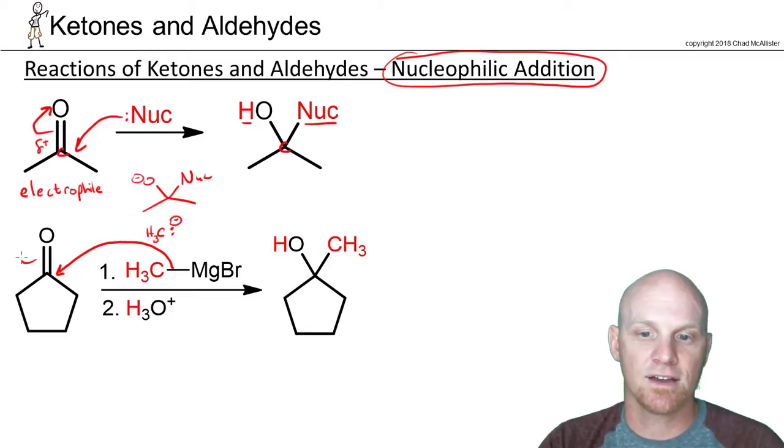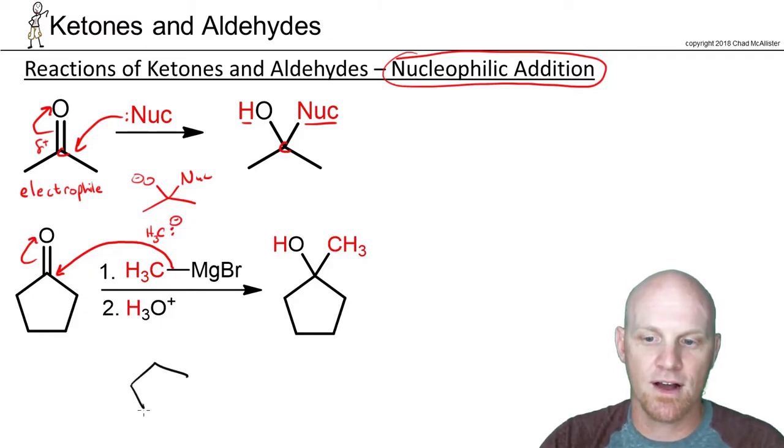So in this case, our Grignard comes and attacks, kicks electrons up to the oxygen, and we get this sort of looking intermediate, an alkoxide.